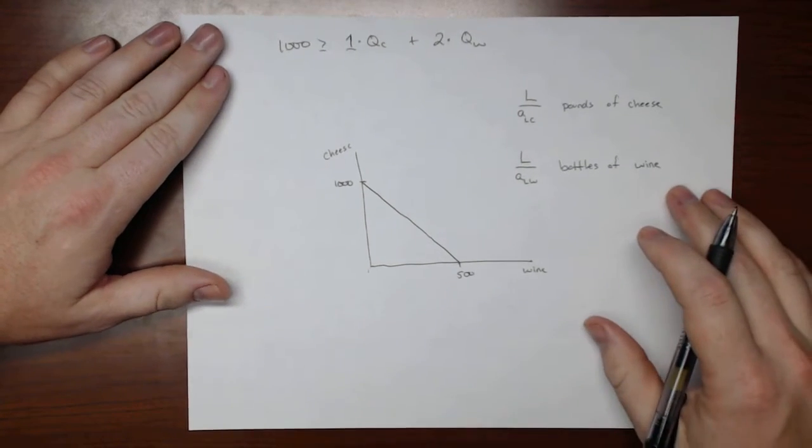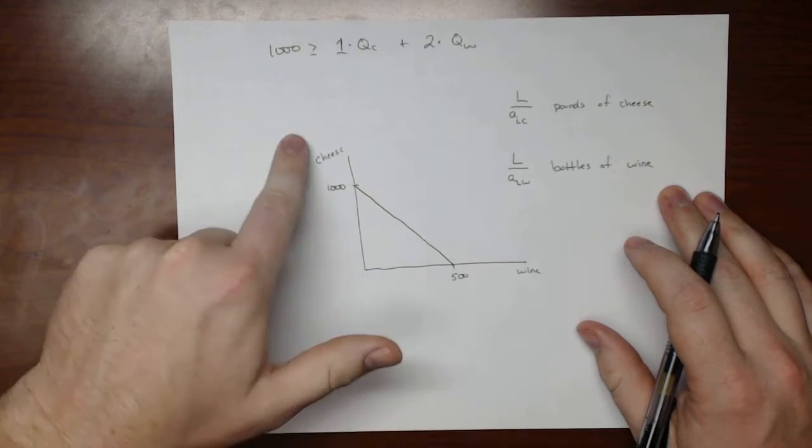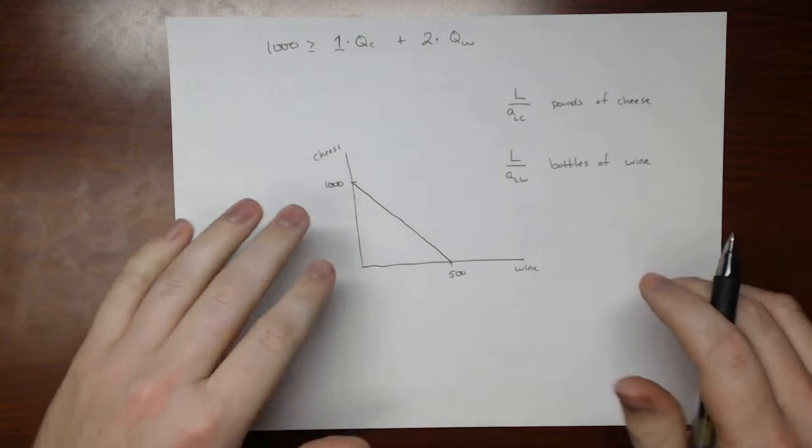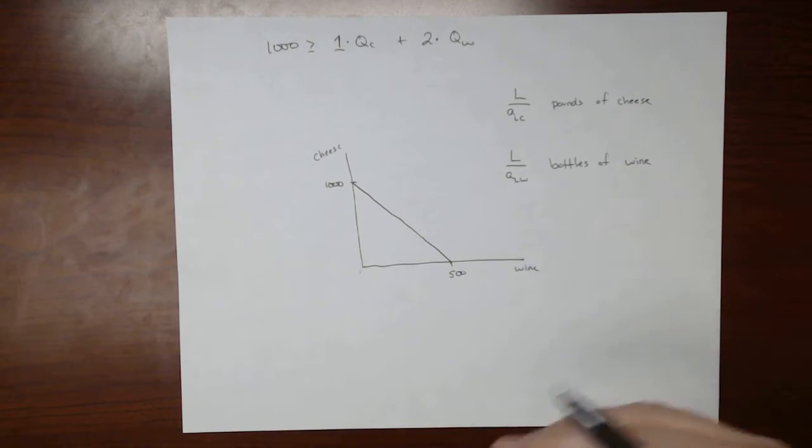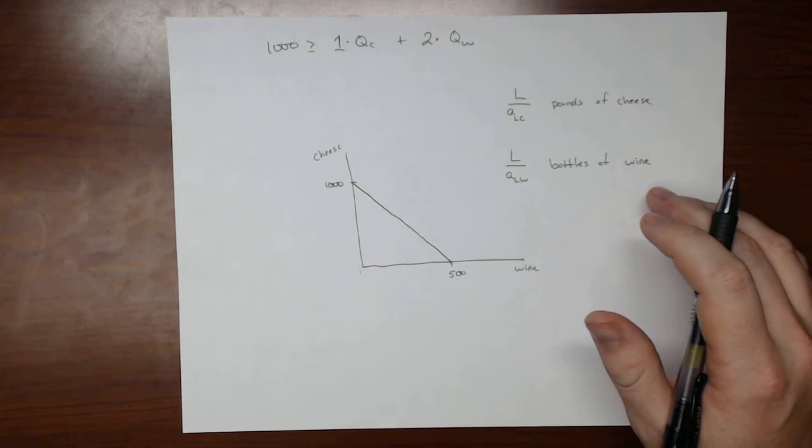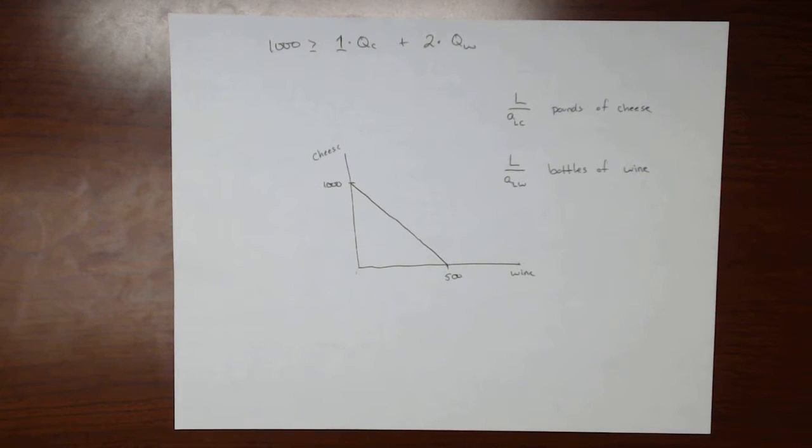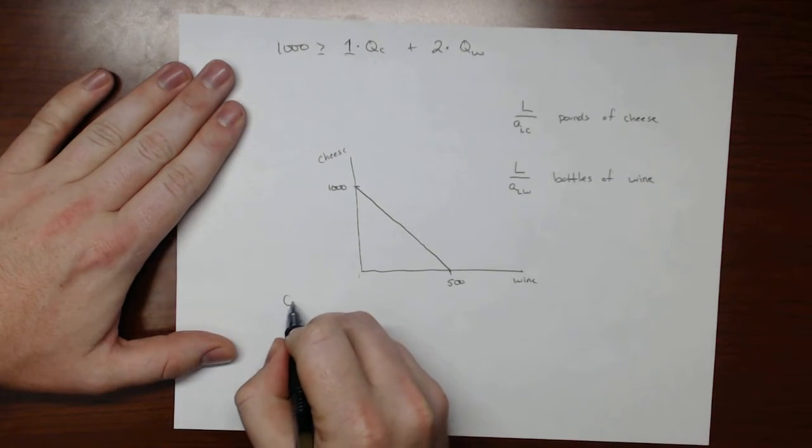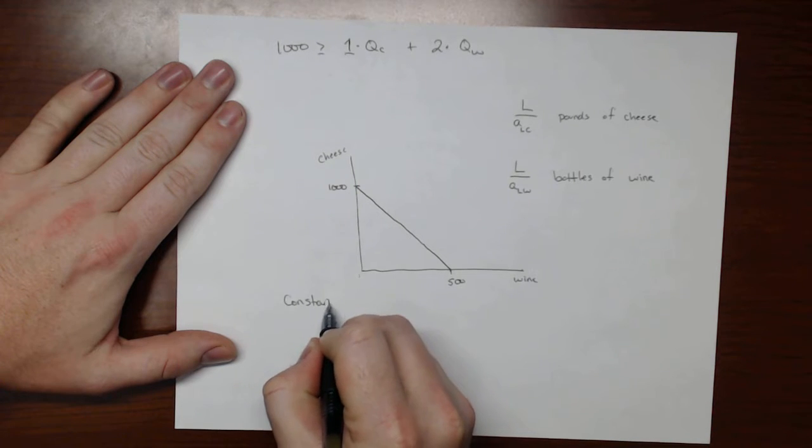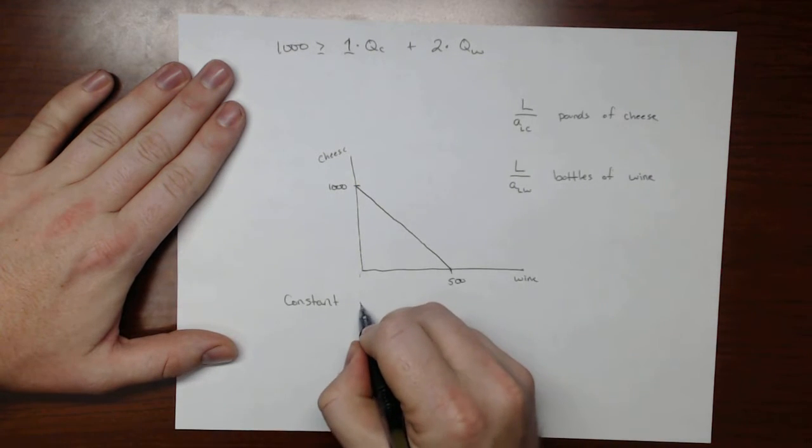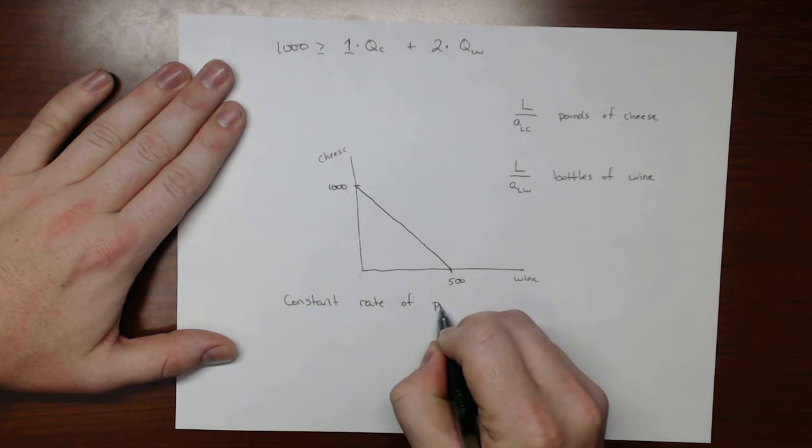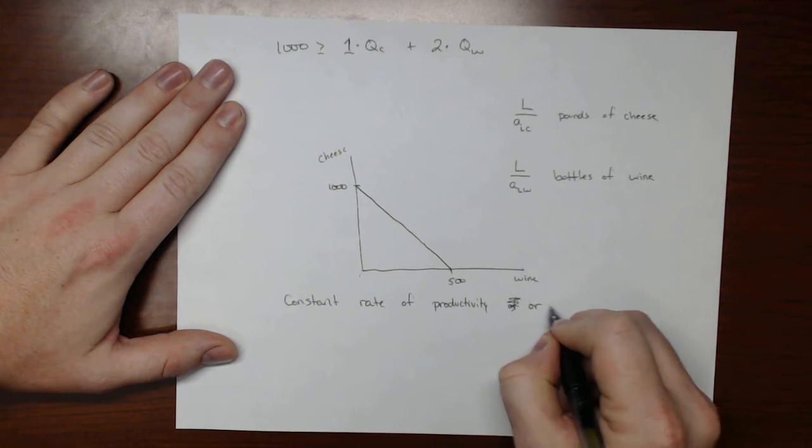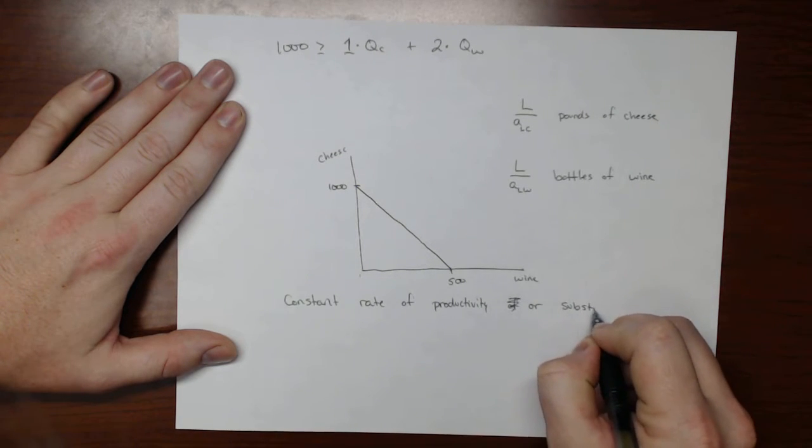So one thing that I should note is it doesn't matter if we put wine on this axis or cheese on this axis or what we put. We just change the way that this thing looks. It wouldn't indicate anything different economically, just be a slightly different looking graph. And notice that we're assuming a straight line, which means we have a constant rate of productivity or substitution.